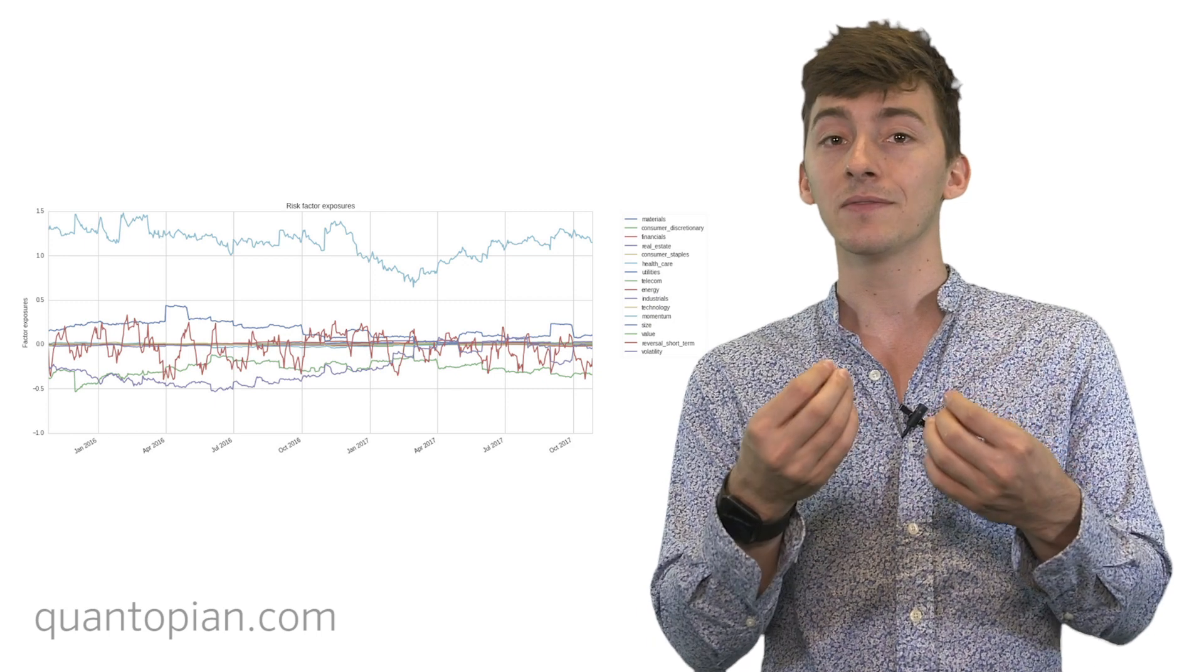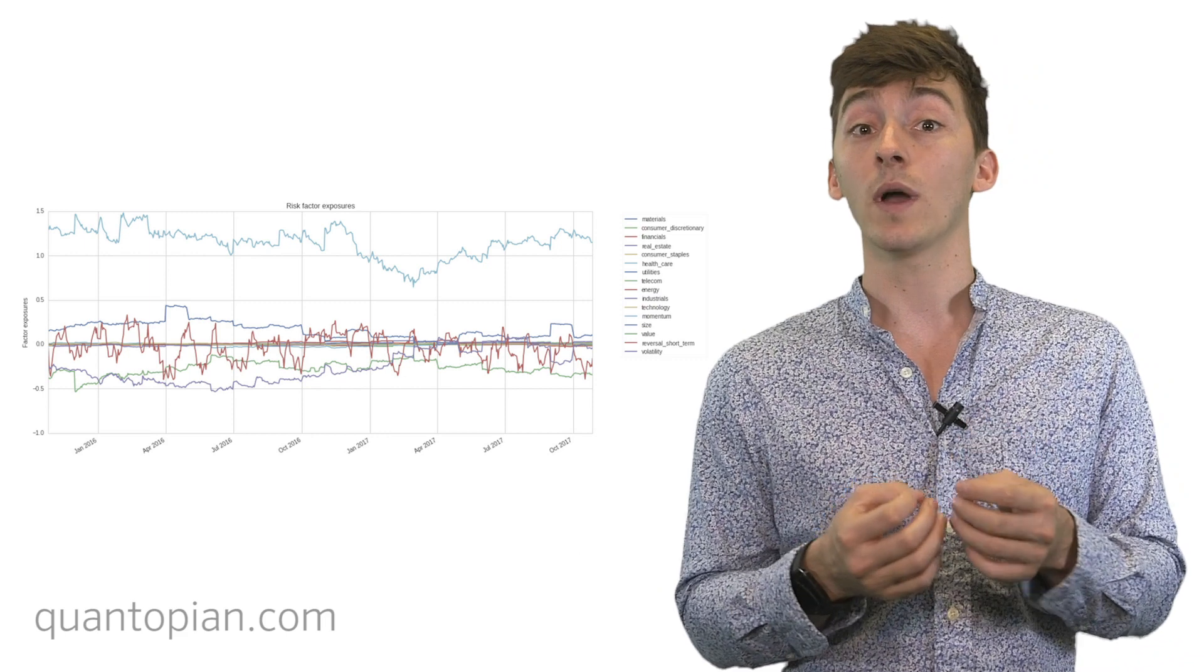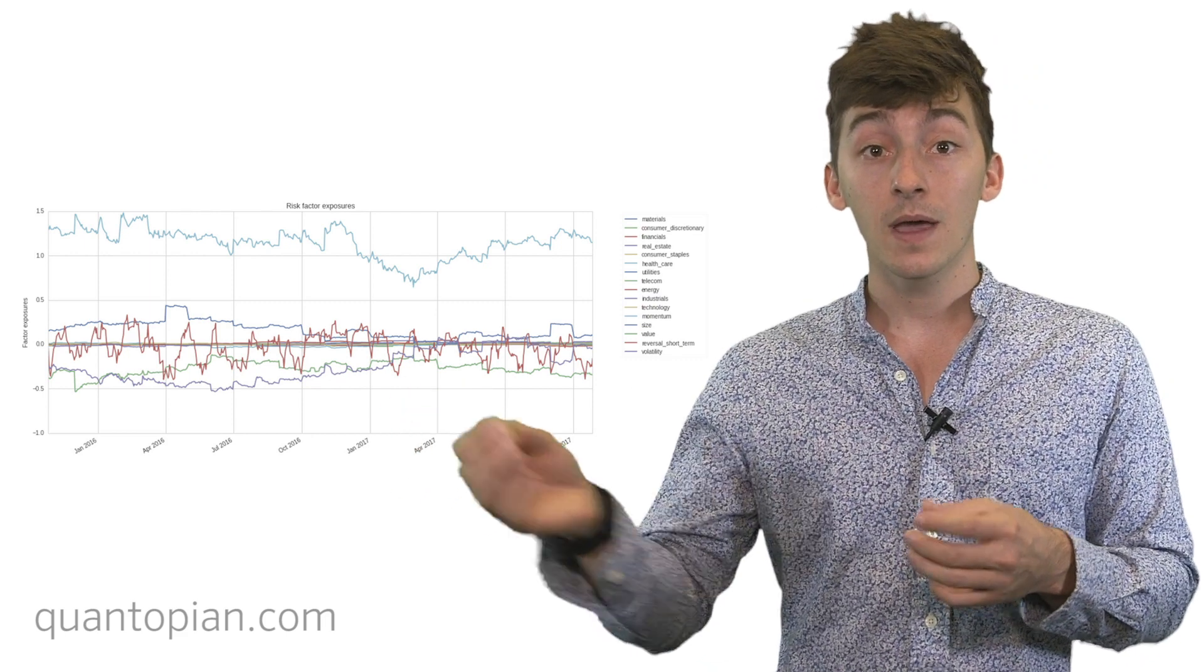We can get an idea of, well, we have this base volatility for our portfolio. What percentage is coming from what individual risk factor? And this lets us get an idea of the unexpected risks that can come with an individual portfolio.